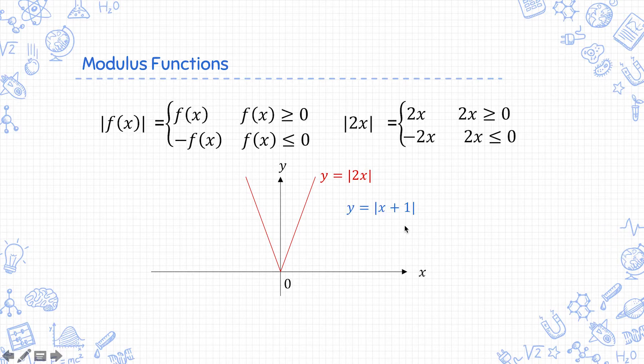Similarly, first you look at the graph of y equals x plus 1. Then you flip over the negative part. And this part of the graph follows the equation y equals negative x minus 1.